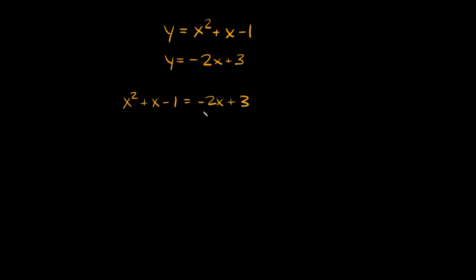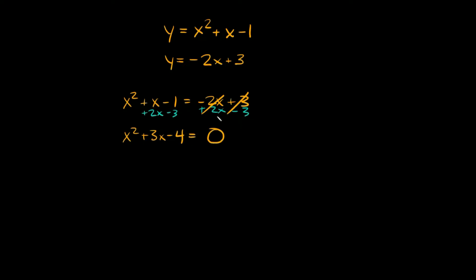The first thing I'm going to do is add 2x to both sides and then subtract 3 from this side. So those terms cancel out and on this side we're going to have x squared plus 3x minus 4 equals 0, since we don't have anything on that side anymore.